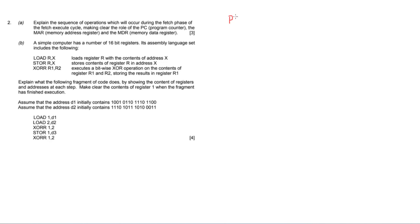Quick recap: with the fetch-decode-execute cycle, memory addresses start in the program counter and the program counter passes the memory address over into the memory address register. The memory data register gets the address from the memory address register and goes and fetches the data, which gets stored in the memory data register. As soon as the PC hands over the memory address, the PC increments by 1 so that it can go and start fetching the next instruction.